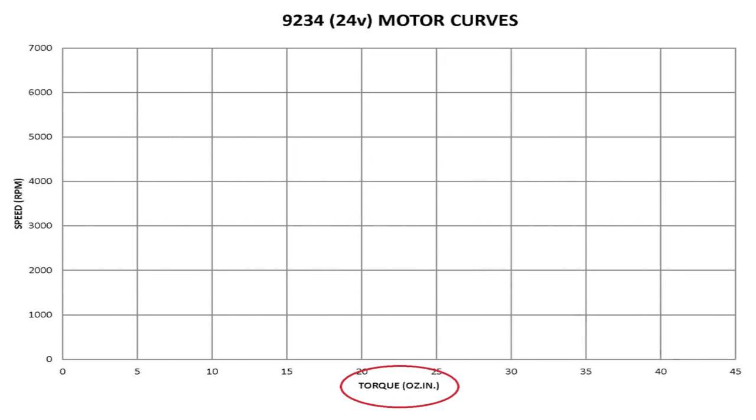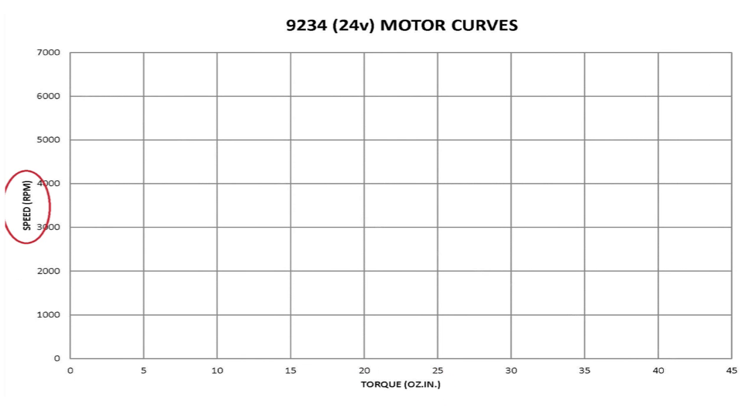The horizontal axis is for the torque. Ounce inches or newton meters are the best units for this motor. The left vertical axis is for the speed. Rotations per minute or radians per second are typical units.